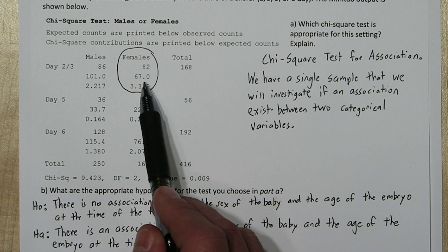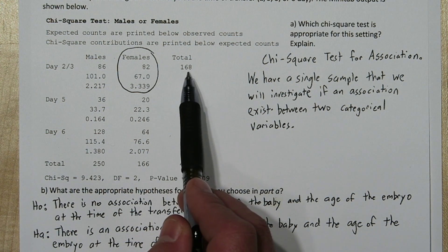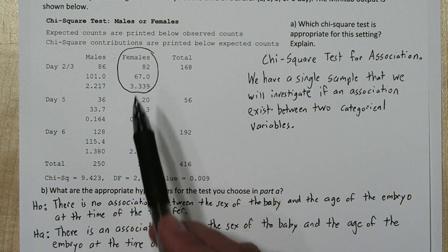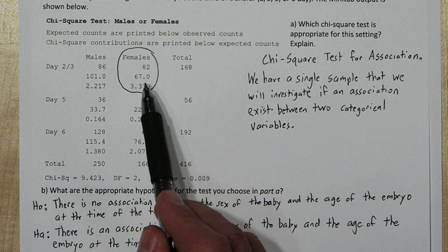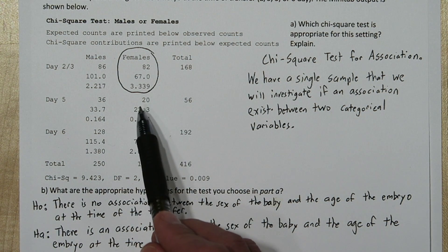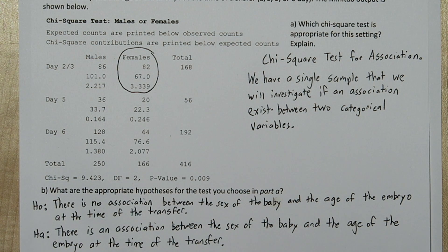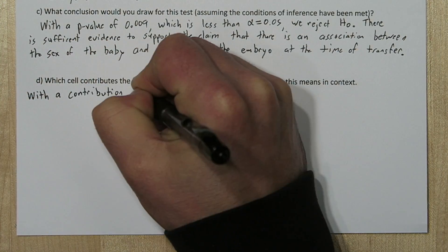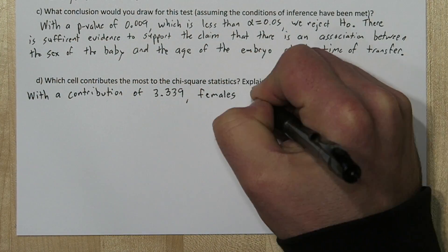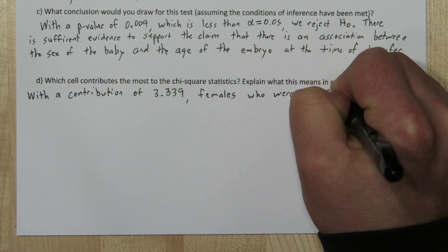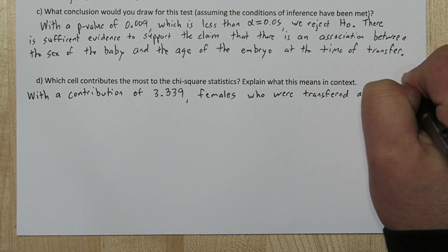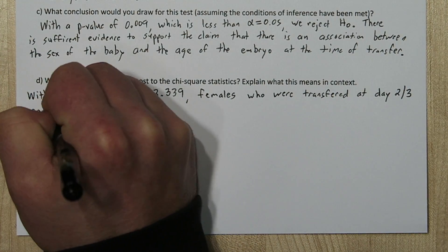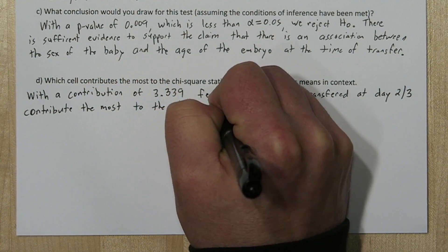We only expected to have 67 females out of the 168 2-3 day old embryo transfers, but we ended up with 82. So that was a pretty surprising result, and it ended up contributing a lot to the chi-square test statistic. With a contribution of 3.339, females who were transferred at day 2-3 contribute the most to the chi-square statistic.